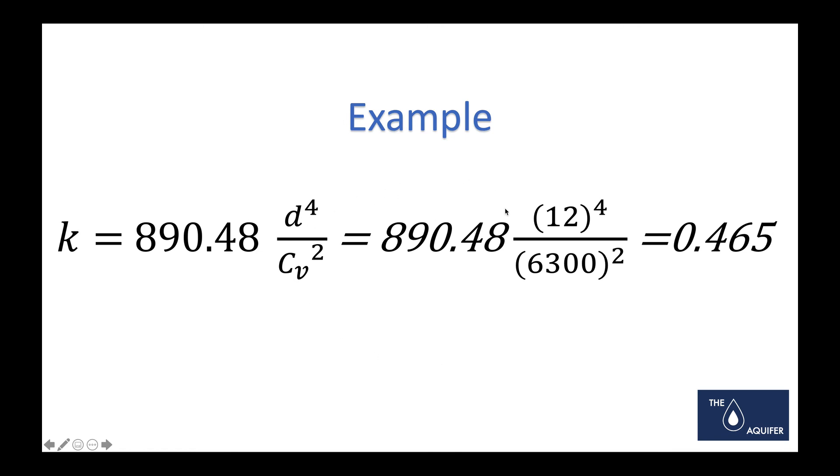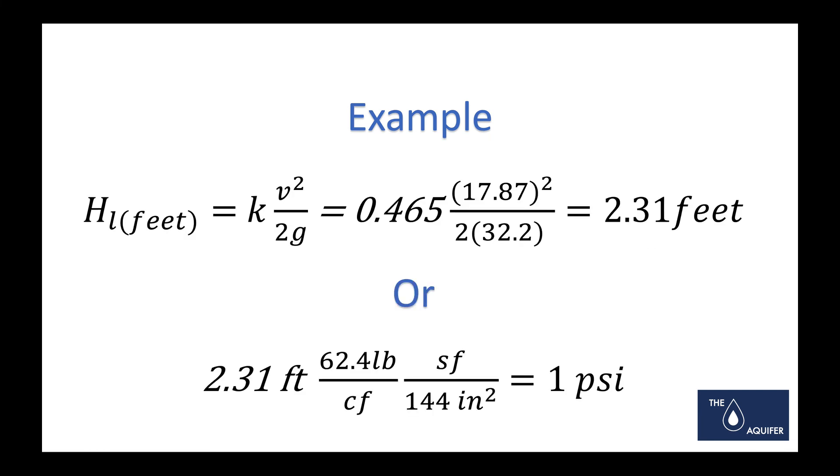Applying those numbers, we've got our diameter—12 to the fourth power—divided by our Cv to the squared power. We come up with a K value of 4.65. That seems reasonable based on the type of work and our knowledge of those numbers. Then applying that through Darcy-Weisbach: 4.65 times our velocity squared divided by 2 and our gravity constant, we would come up with our head loss in feet is 2.31 feet.